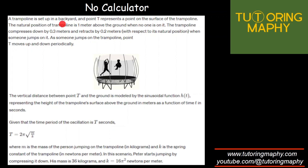A trampoline is set in a backyard, and point T represents a point on the surface of the trampoline. The natural position of trampoline is one meter above the ground when no one is on it. It compresses down by 0.3 meters and retracts by 0.2 meters with respect to its natural position when someone jumps on it. As someone jumps on the trampoline, point T moves up and down periodically.